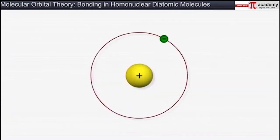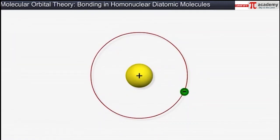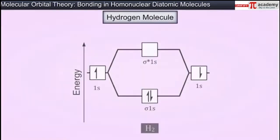A hydrogen atom has just one electron and it is placed in the 1s orbital. So a hydrogen molecule will have two electrons that are present in the sigma 1s molecular orbital.